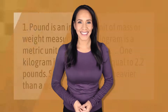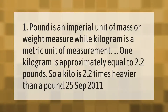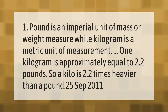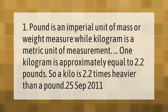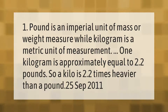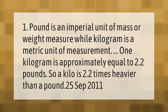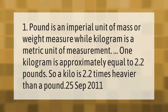One pound is an imperial unit of mass or weight measure, while kilogram is a metric unit of measurement. One kilogram is approximately equal to 2.2 pounds, so a kilo is 2.2 times heavier than a pound.